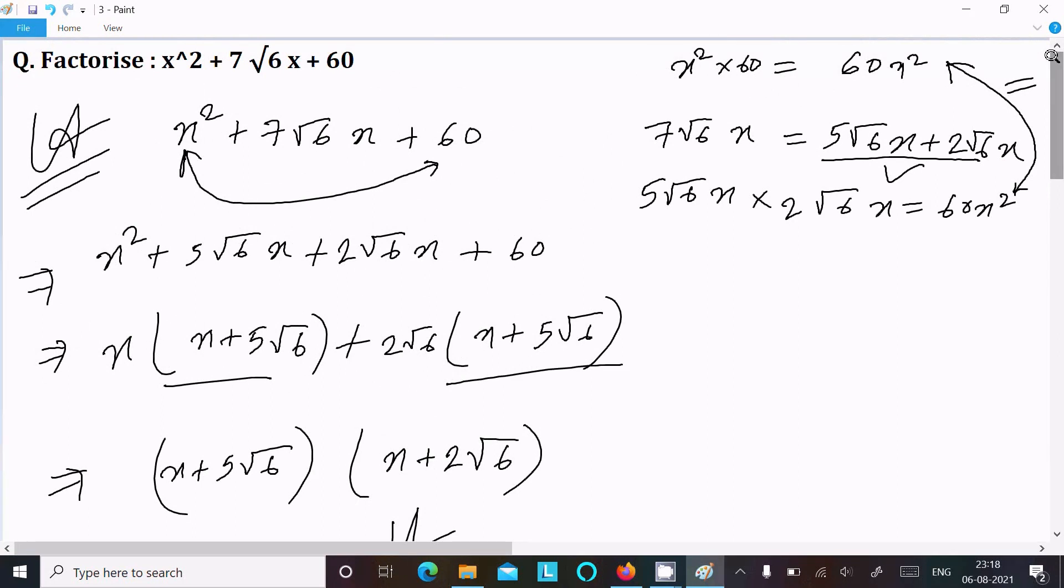So here first write the given, multiply first term with the last term, then after write the middle term, break into two parts. When that add, it's equal to 7√6, and when that multiply, it equals 60x².